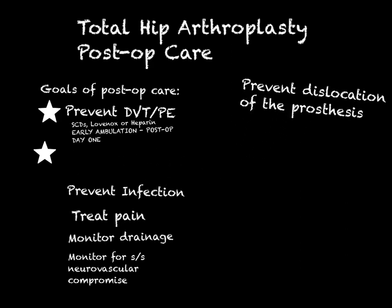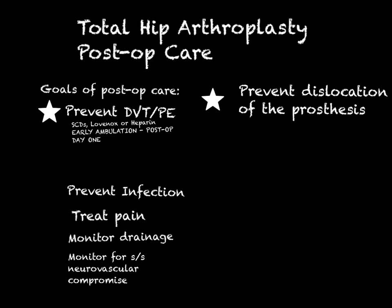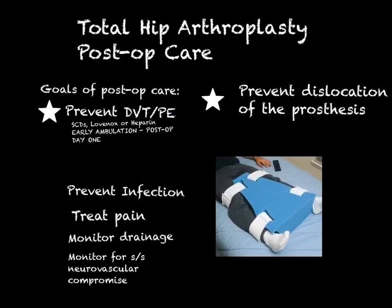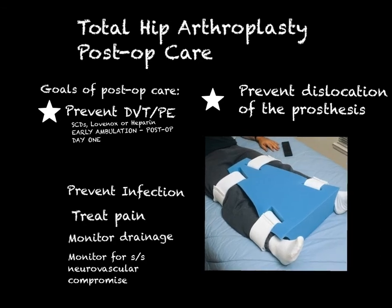The other big complication to remember is that the hip replacement can be dislocated early out in the first several days postoperatively. An abductor pillow — a wedge pillow — is used to keep the legs in an abducted position. You do not want the legs to roll inward or adduct, because that can lead to displacement of the prosthesis. The risk is higher for the first four months postoperatively.